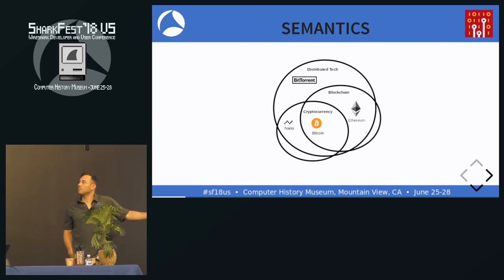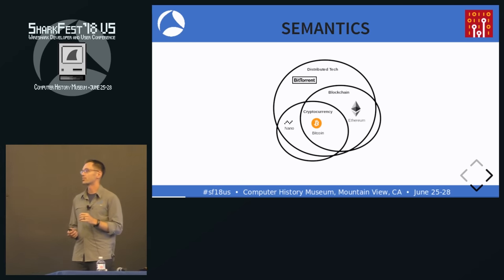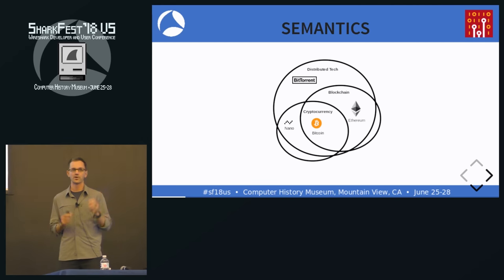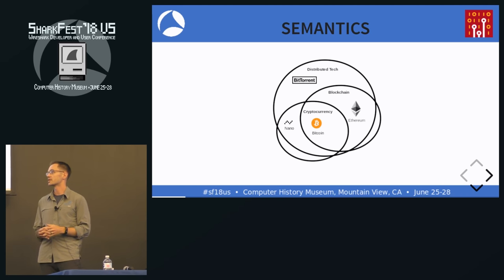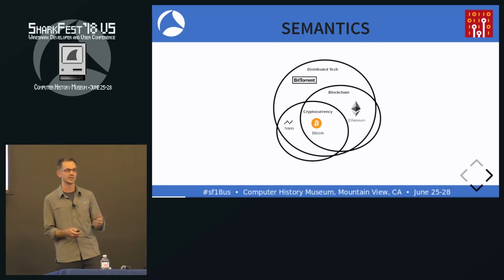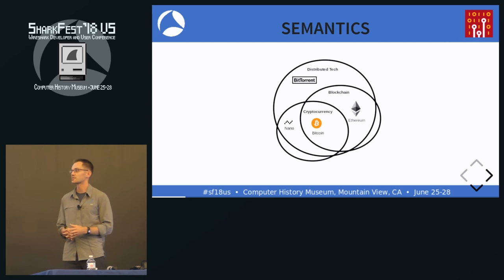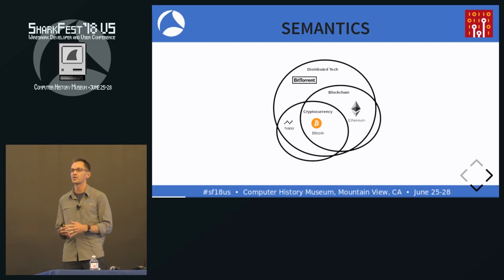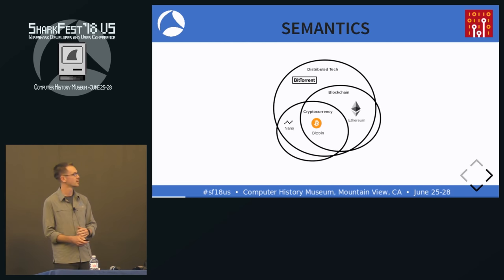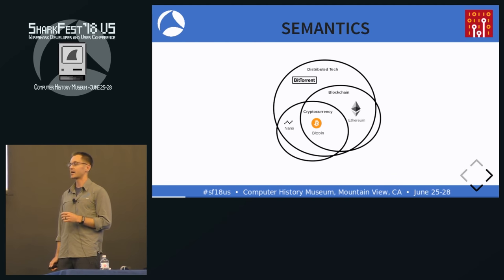Bitcoin and Nano are both cryptocurrencies — their intended purpose is to be used as digital currency. Ethereum, as a difference, is a platform that allows you to write essentially software, often used as a kind of contract. So if you're writing a legal contract, it allows you to do this in a decentralized and distributed nature. It has some similar characteristics to Bitcoin, but its purpose is not necessarily as a digital currency. We have a small group here today, so if any topic needs clarification just stick your hand up and we'll answer those ad hoc as we go along.